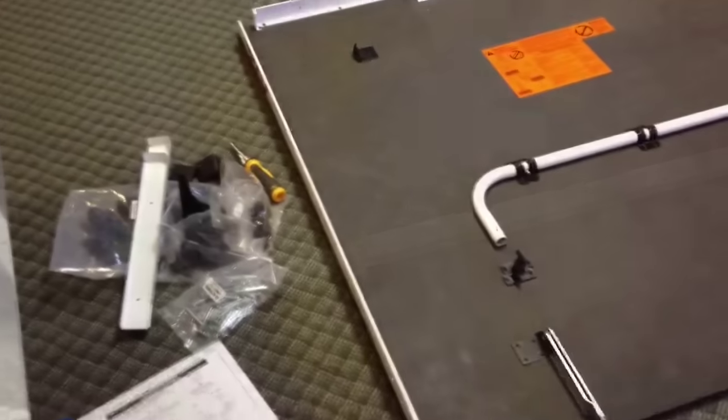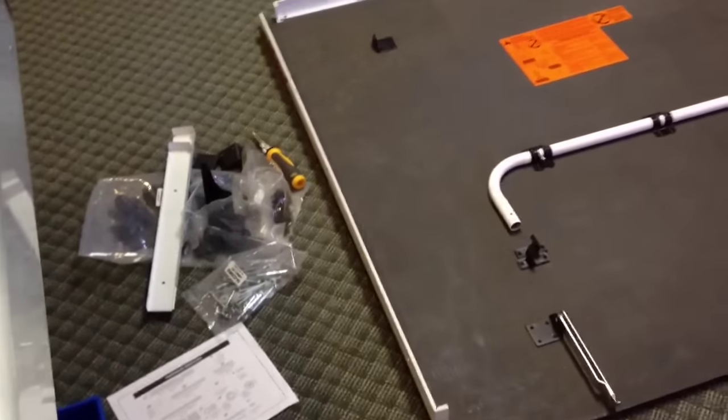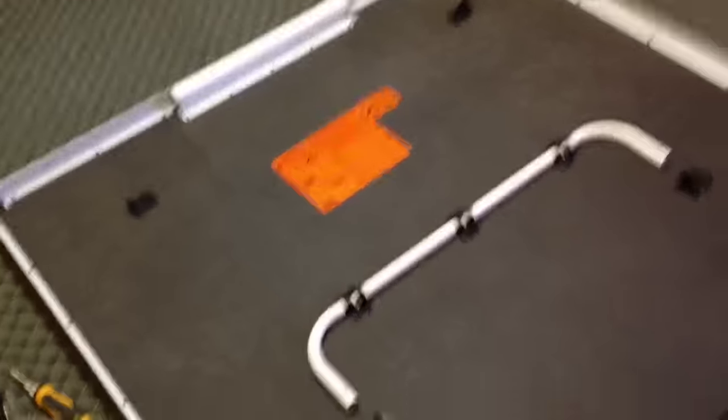We're now on step 11 through 13, putting on the end rails. Got steps 11 through 13 done. All the rails are up there. There weren't pilot holes for all those over there, so we've got some of those. I think we're good there.